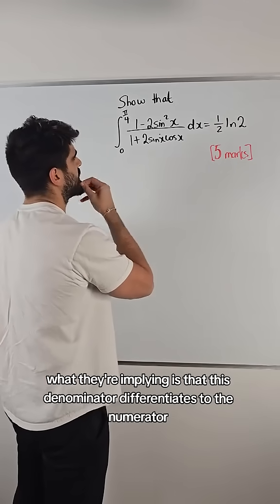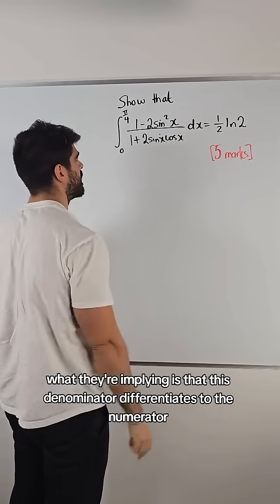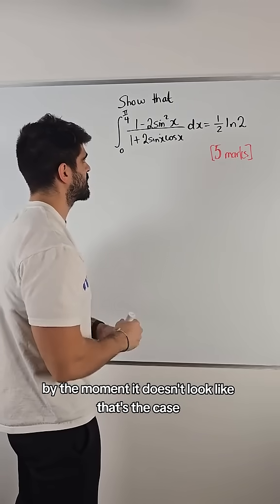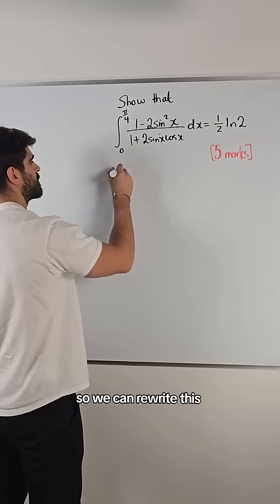So, essentially what they're implying is that this denominator differentiates to the numerator. By the moment, it doesn't look like that's the case, but we should notice that we have some double angle identities here. So, we can rewrite this.